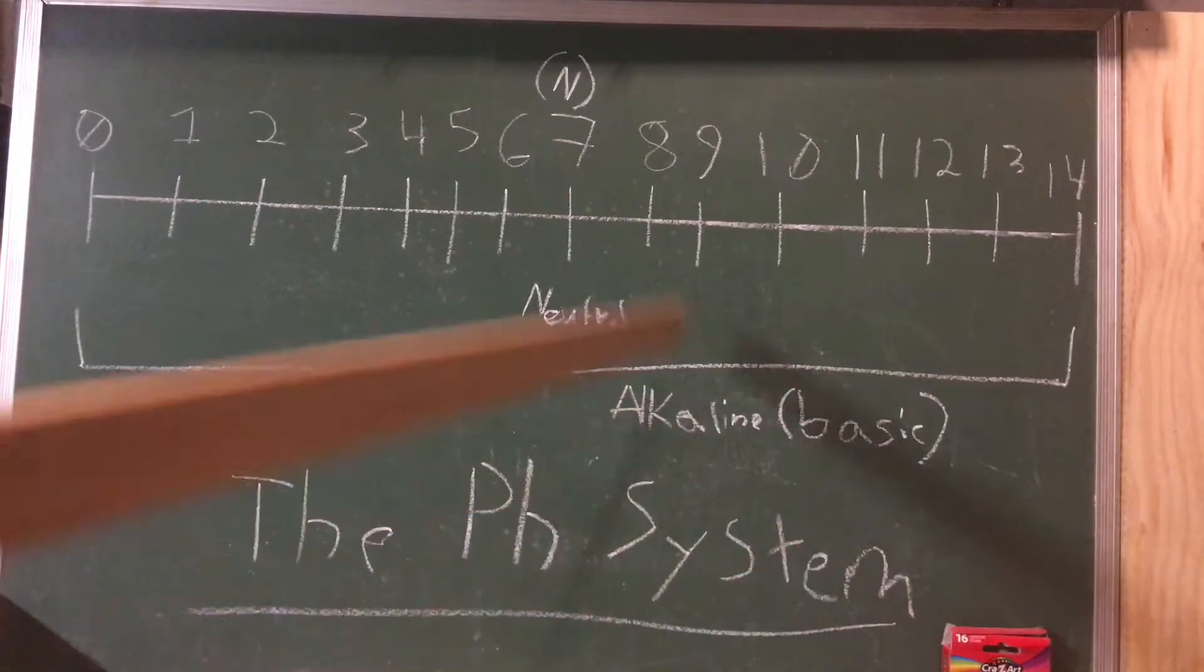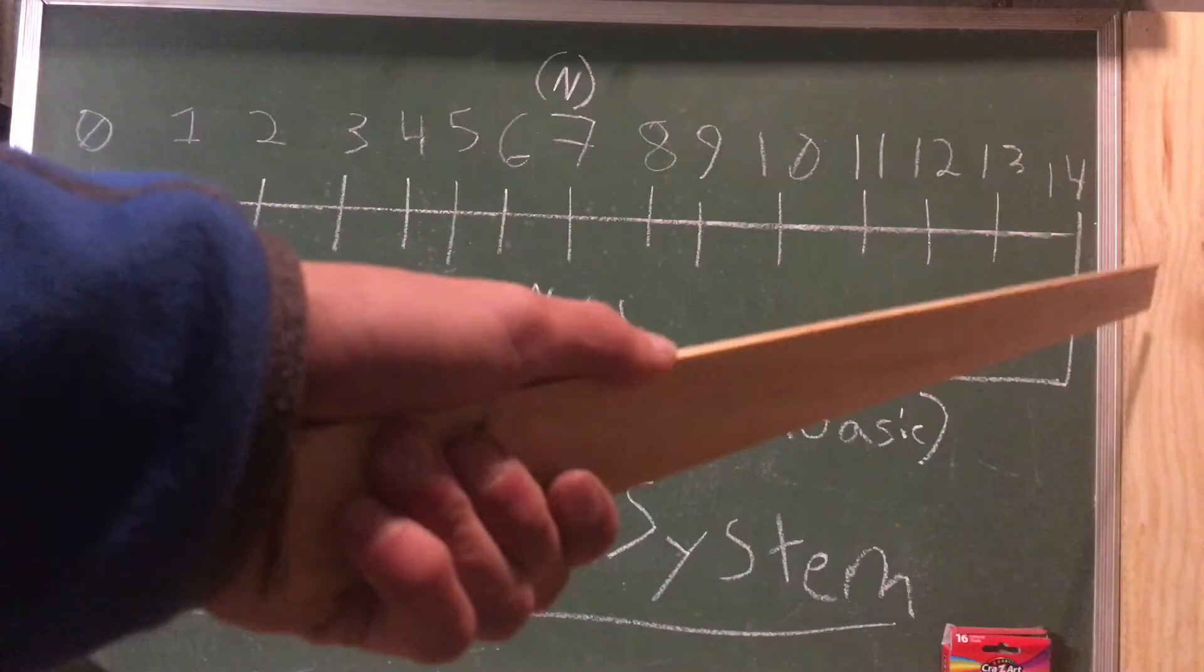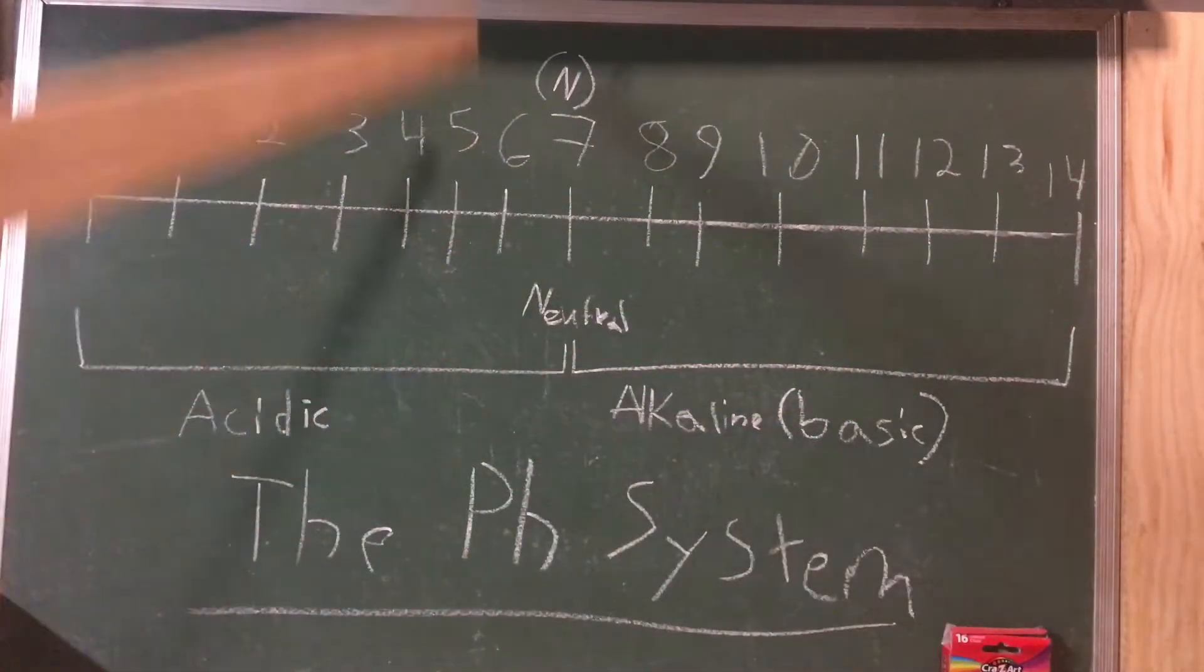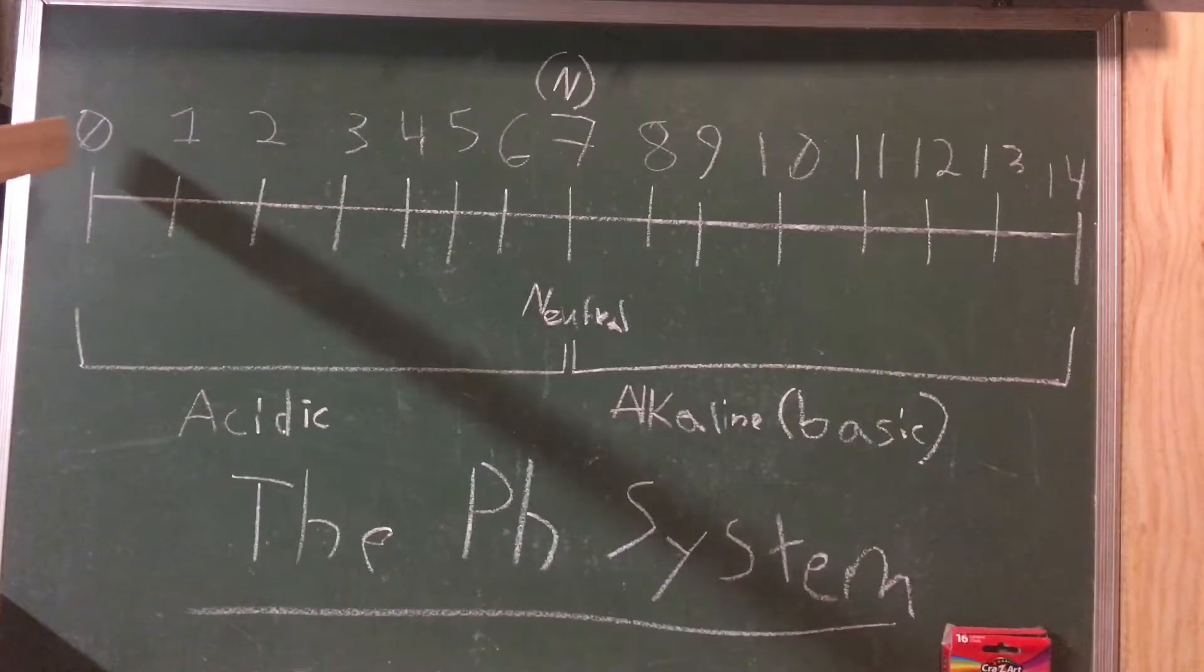Alkaline is something that's basic, something over seven all the way to 14. You cannot have anything past 14 and you can't have any negative numbers. Anything that is acidic is a number smaller than seven but larger than zero.